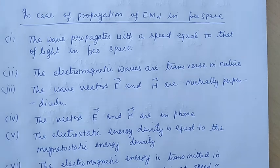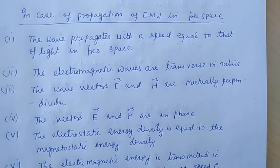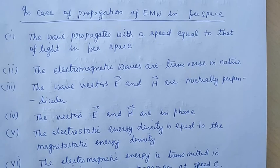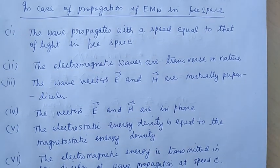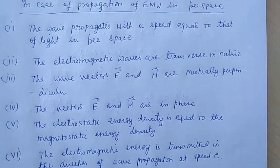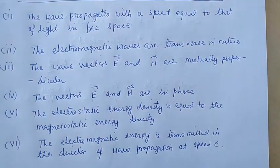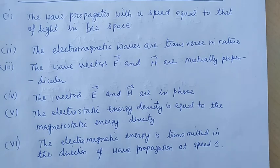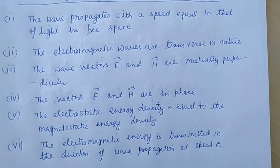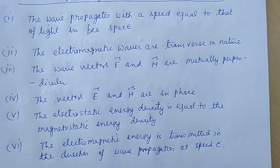In summary, the consequences of propagation of electromagnetic waves in free space are: (1) the wave propagates with speed equal to that of light; (2) electromagnetic waves are transverse in nature; (3) the wave vectors E and H are mutually perpendicular; (4) the vectors E and H are in phase; (5) the electrostatic energy density equals the magnetostatic energy density; and (6) the electromagnetic energy is transmitted in the direction of wave propagation at speed c.